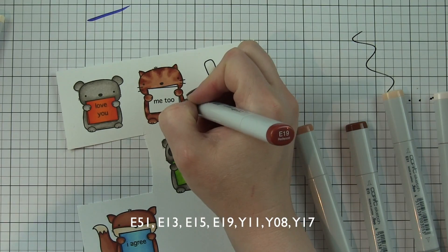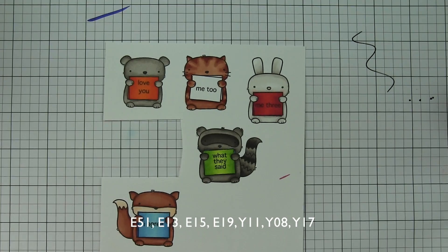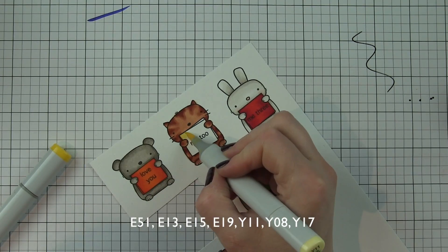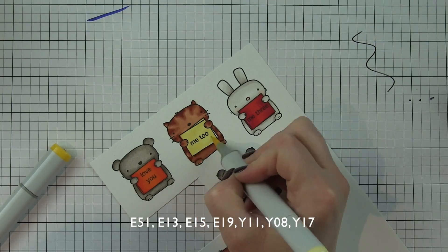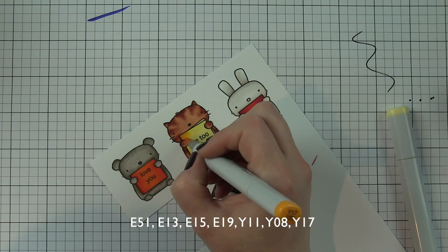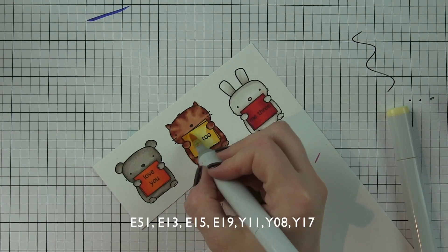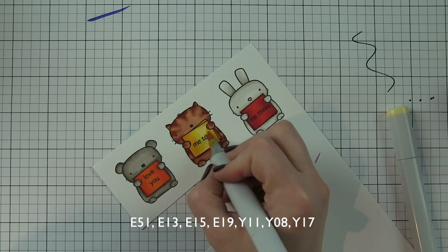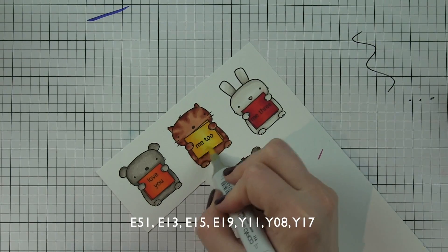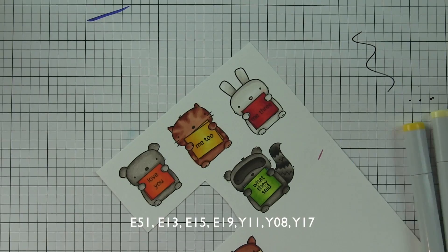His sign is going to be in yellows Y11, Y08, and Y17 to kind of round out my primary colors. Lightest color concentrated in the center, my darkest color coming in from each side, pull that out with the mid-tone color and blend down the center with the lightest color.